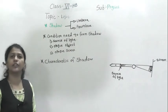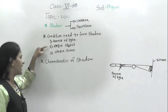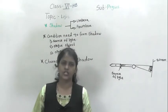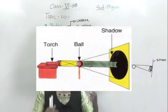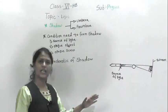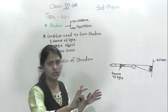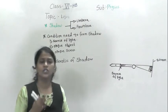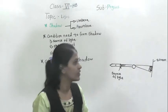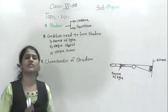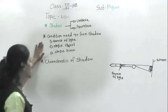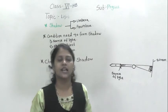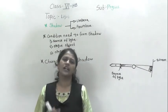So these three things are very important to form a shadow: source of light, opaque object, and opaque screen. You can do this activity at your home — take a torch, an opaque object like your pen, and use a wall as your screen. Check whether if one of the things is missing, whether the shadow will form or not.